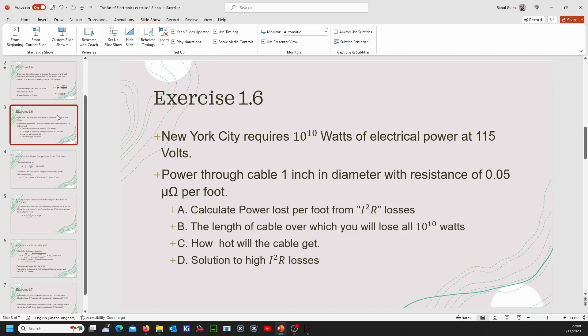The first part you need to calculate the power lost per foot from I squared R losses. The second part we need to calculate the length of cable where we will lose all of the power that is supplied by the system. The third part of the question we need to calculate how hot the cable will get with that power going through it. The last part of the question asks you to propose the solution.